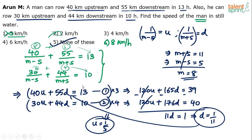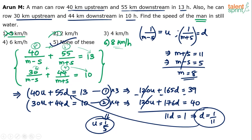All other options get eliminated and the answer is 8 km/h. Since the first four options don't match, the fifth option — none of these — is the correct answer. This verification method works, but you need to be quick and smart about it. Otherwise trying all possibilities is very time-consuming. The key insight is that m + s is highly likely to be 11, which lets you eliminate options very quickly.